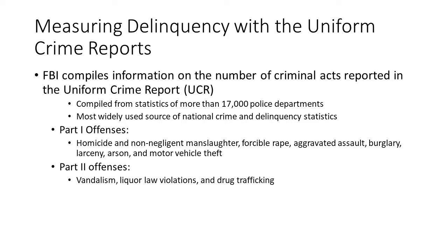Other data found in the UCR includes characteristics of individuals arrested: gender, age, and race, and also whether a crime was a Part 1 or Part 2 crime. Part 2 crimes are the non-serious offenses — anything not designated Part 1. Examples include vandalism, liquor violations, and drug trafficking. Some sex offenses fall under both Part 1 and Part 2, with the more serious ones like rape falling under Part 1.